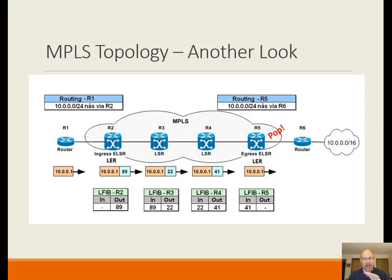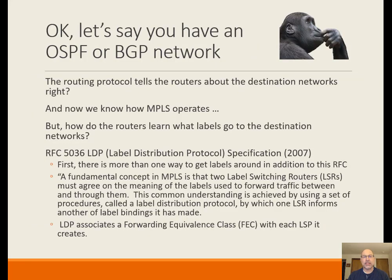The topology inside the MPLS cloud could be much more complex. R3 and R4 are label switched routers — they don't know anything about routing at layer 3; they're just forwarding based on the layer 2.5 MPLS tag. The entire path from R1 to R6 is the label switched path through the MPLS cloud. If you have an OSPF or BGP network, all routers know where all the destinations are. A routing protocol finds all destinations, eliminates loops, finds the most efficient pathway, and may do some load balancing.